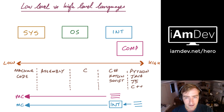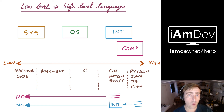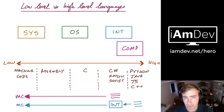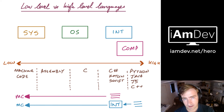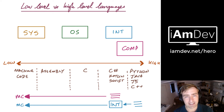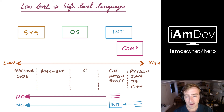The advantage of an interpreted program is I just need to send out my Python or Java once. I just need to fire off my Java app once, and then it will run everywhere that has the Java platform installed, because it takes care of that machine code conversion on the fly.